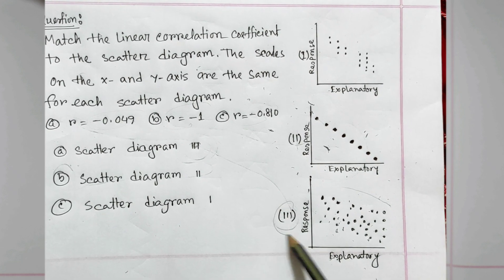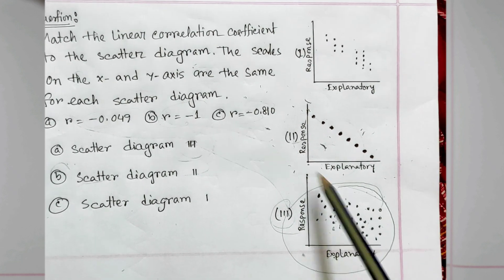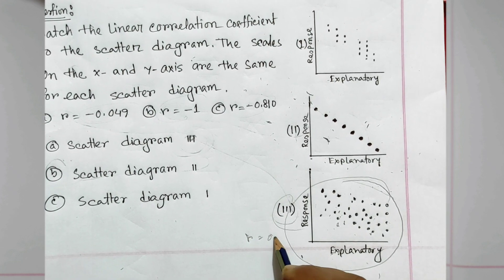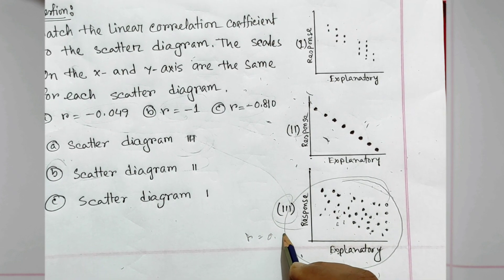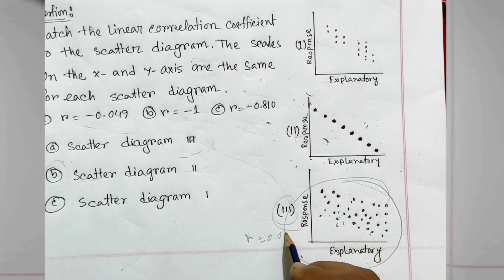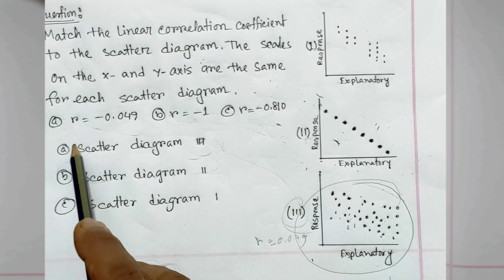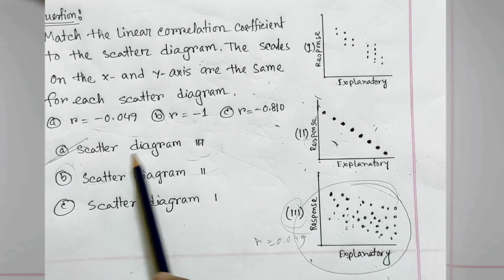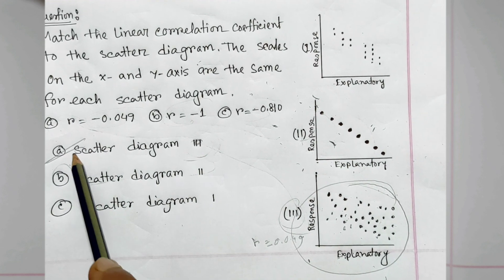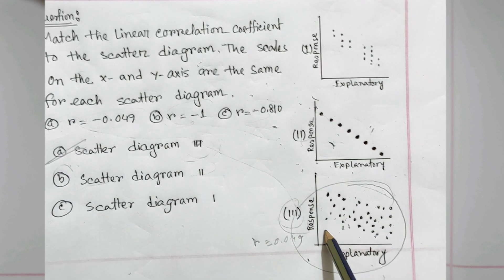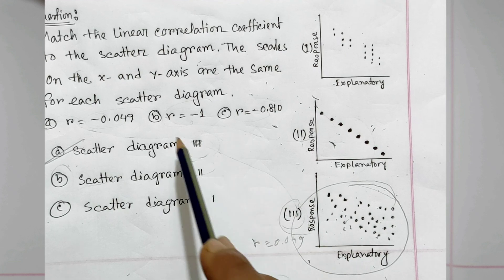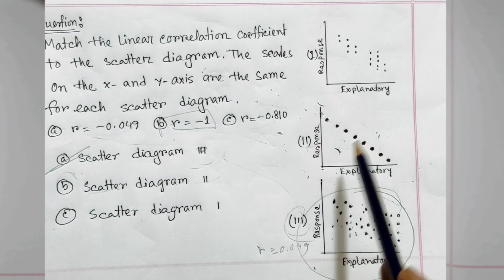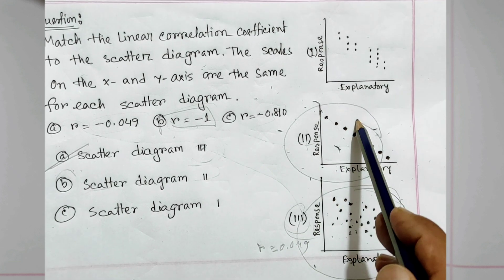Looking at the third graph, the correlation coefficient r is equal to approximately minus 0.049. So scatter diagram A is equal to three.